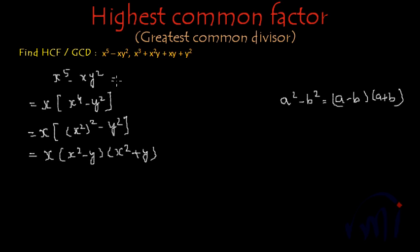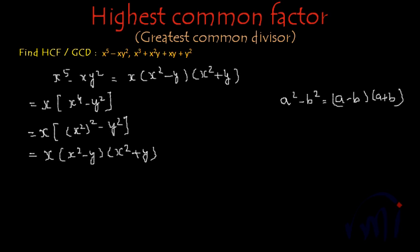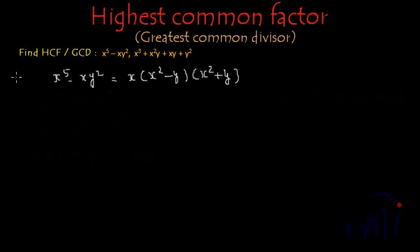So the factors of x to the power 5 minus xy squared are x multiplied by x squared minus y, multiplied by x squared plus y. So we have found the factors of the first expression and now we will find the factors of the second expression.